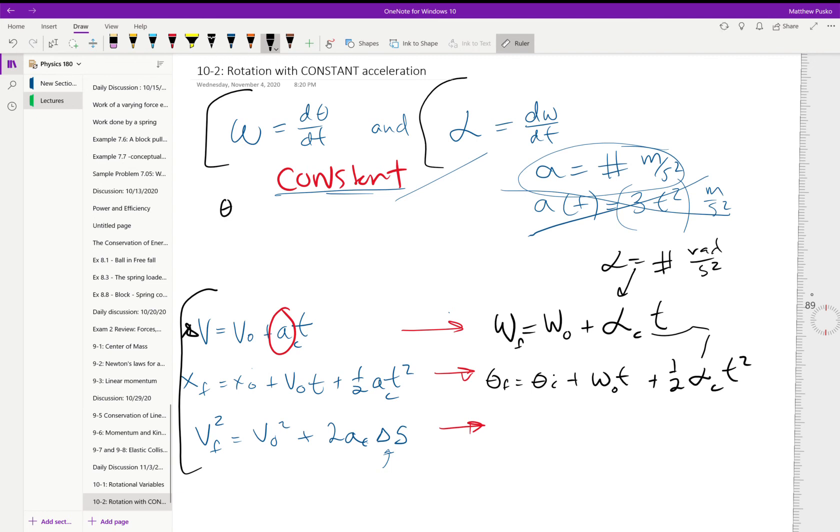So to get from theta to omega to alpha, we would take time derivatives. To go the other way, from alpha to omega to theta, we would integrate that thing with respect to time.